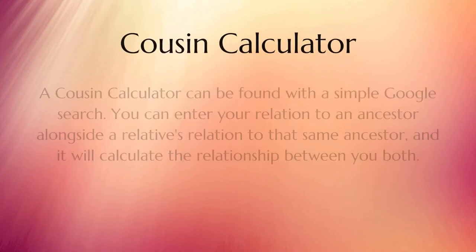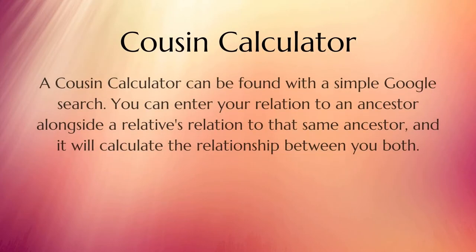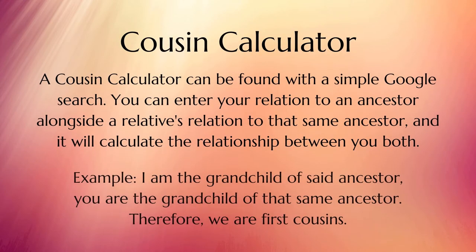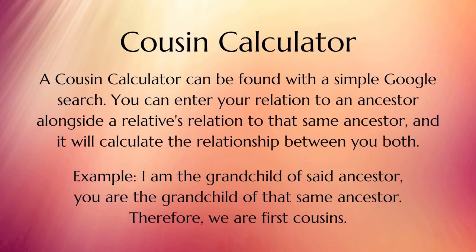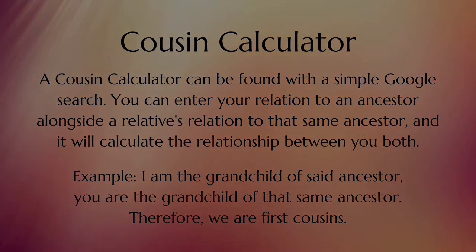Cousin Calculator. A cousin calculator can be found with a simple Google search. You can enter your relation to an ancestor alongside a relative's relation to that same ancestor, and it will calculate the relationship between you both. For example, I am the grandchild of said ancestor, and you are the grandchild of that same ancestor — therefore, we are first cousins.